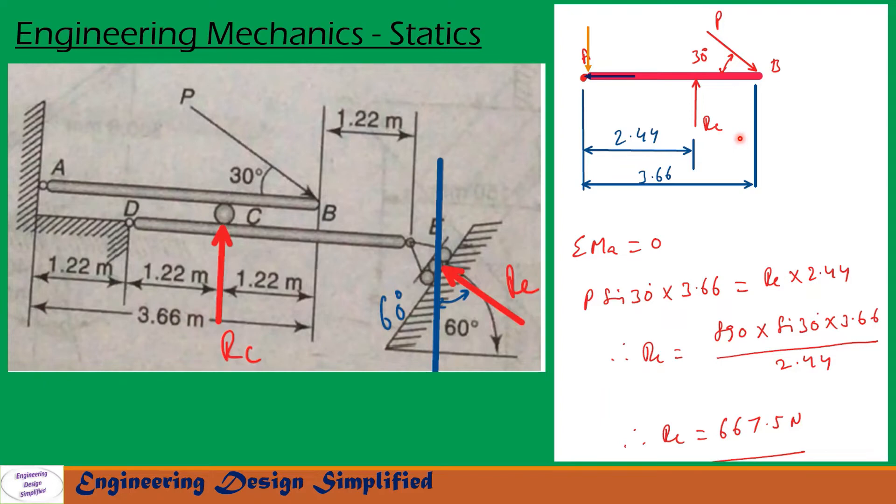So let us take moments about A. Moments about A can be written as sigma MA equal to zero. And moment due to P about A can be written as the vertical component of P into the distance, that is P sin 30 into 3.66. That equals the moment due to RC about A, which will be RC into the distance 2.44. So it is written here, RC into 2.44. So from this, after simplification, we get RC equal to 667.5 Newton.